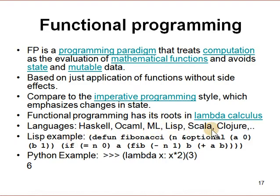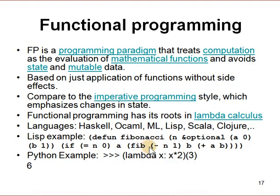Examples of functional programming languages include Haskell, OCaml, ML, Lisp, Scala, and Clojure. Here's a Lisp example defining a Fibonacci function: it takes N as input, optionally A starting at 0 and B starting at 1, and the expression computes: if N equals 0, return A; otherwise return Fibonacci of N minus 1, B, and A plus B. Python also has a lambda keyword — for example, lambda X: X times 2 is a nameless anonymous function; you give it 3 and it returns 6.